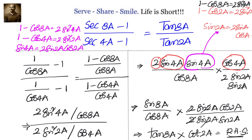So we have used the formula 1 - cos2a = 2sin²a and sin2a = 2 sin a cos a appropriately at different levels, and simplified the problem by converting 4a one time into 8a and another time into 2a, so that we can finally get tan8a / tan2a.